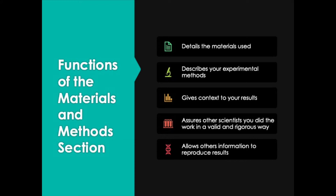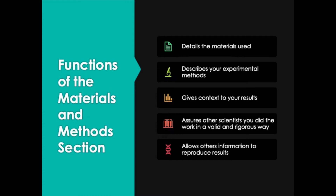The Materials and Methods section will also assure other scientists that you did the work in a valid and rigorous way. That's very important — reviewers will look carefully at how rigorously you carried out your experiments and whether you used valid materials and valid methods. And finally, the function of the Materials and Methods section is to allow others enough information to reproduce the results.